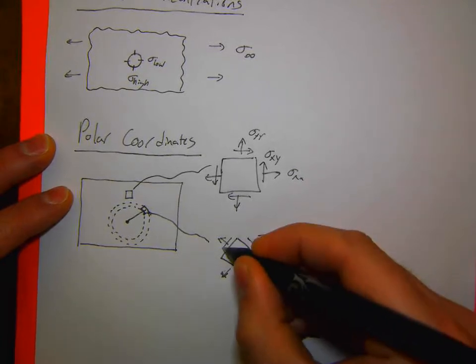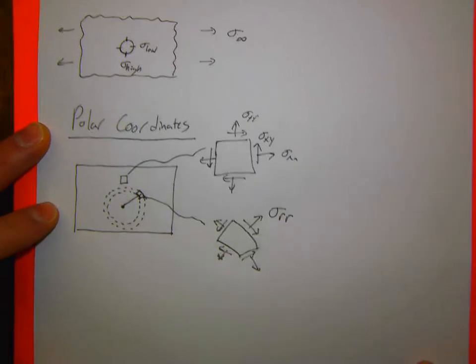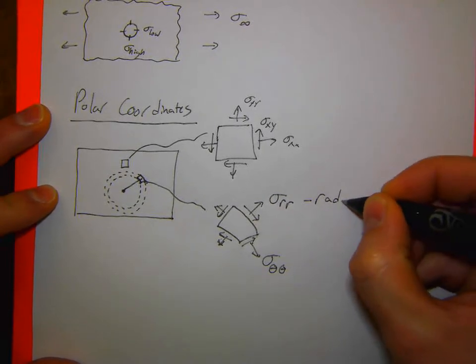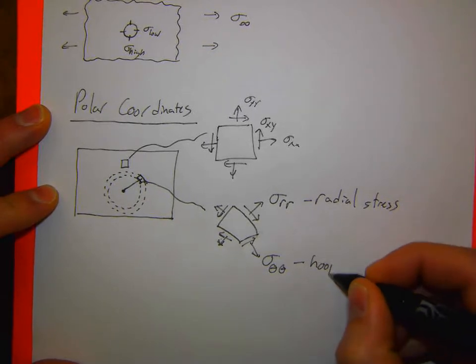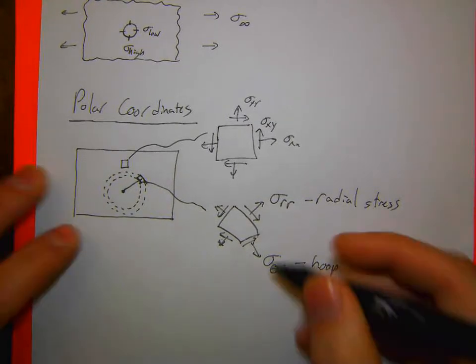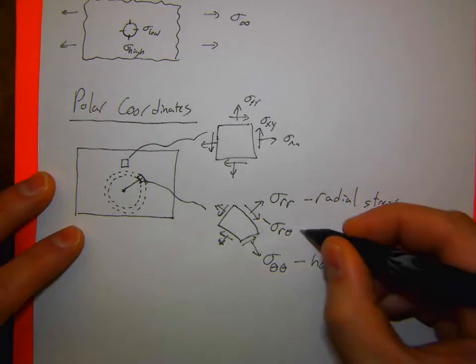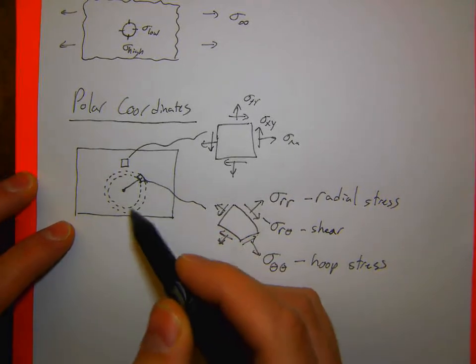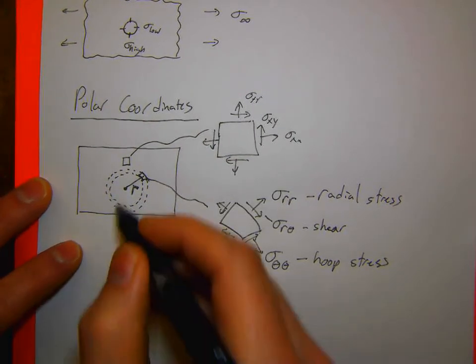Still drawing them the same way, but I'm going to define them differently. I'm going to have a radial stress. So, sigma RR is my radial stress. Hoop stress. So, sigma theta theta. So, this is a radial stress. This is a hoop stress. Because it's acting along this ring, so it's acting along a hoop. And then I still have the shear. So, sigma R theta, which is still just a shear. But now, shear relative to that axis. And these are acting at some distance R away from a particular reference point.